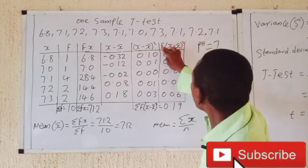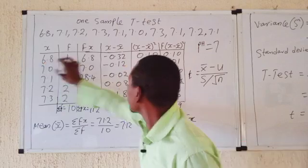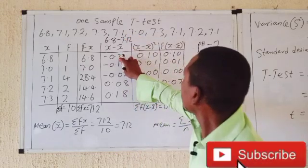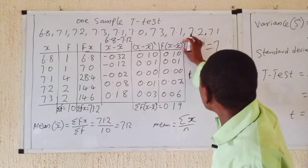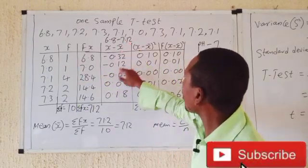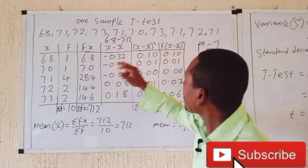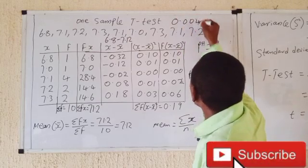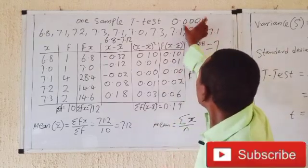For x = 6.8: 6.8 − 7.12, square the result, multiply by f = 1. For x = 7.0: 7.0 − 7.12, square it, multiply by f = 1. For x = 7.1: 7.1 − 7.12, square it — you get 0.0004 before rounding. Multiplying by f = 4 also gives approximately zero at two decimal places.